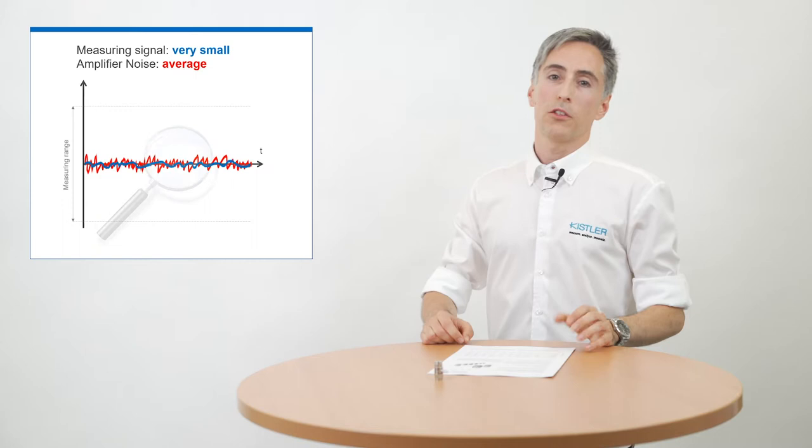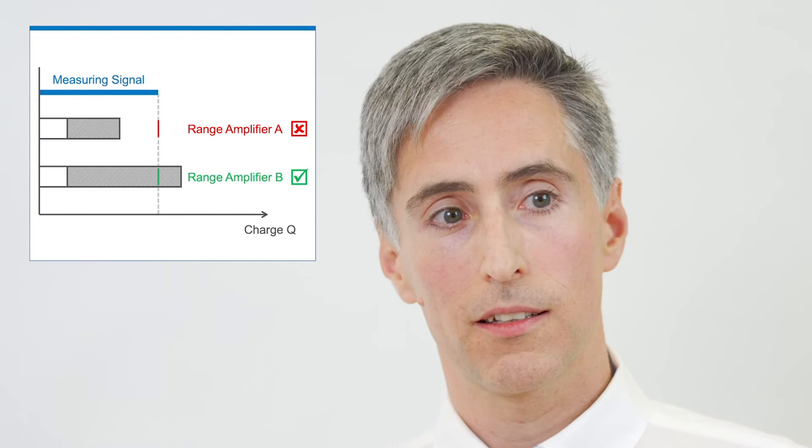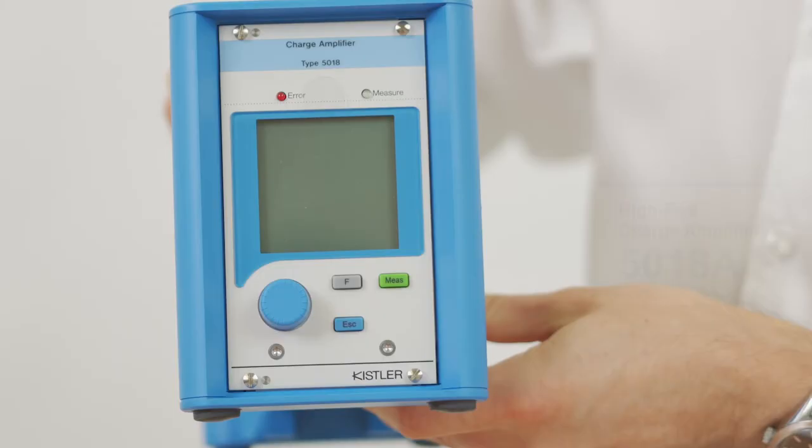Measuring very small signals means that your amplifier needs to have a very low noise floor so that the quality of your signal is still high. On the other end, if you want to measure very big signals, you need a charge amplifier that can cope with big charge signals. High-end amplifiers like the 5018 for example can handle both very small but also very large charge signals. The next important criterion is the frequency range.